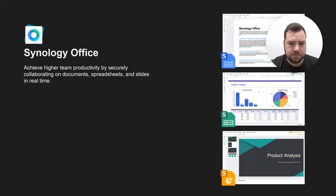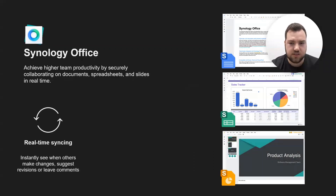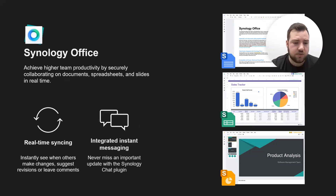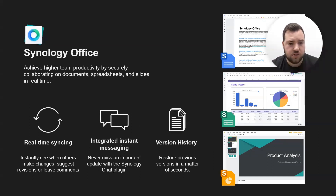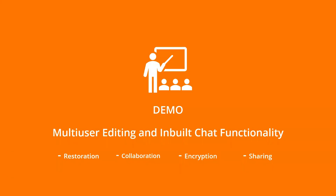Within Synology Office, you can edit documents collaboratively all at once — we'll demo that later. There are powerful management tools: you can track how files have been shared and limit access. For example, you can stop employees uploading .mov files down to that granular level. Synology Office includes documents, spreadsheets, and slides with real-time syncing, comments, suggestions, an in-document chat plugin, and version history so you can restore from a previous point.